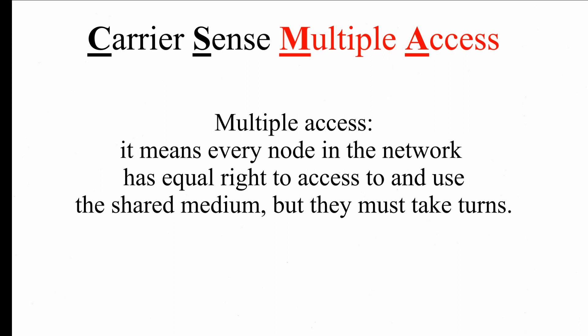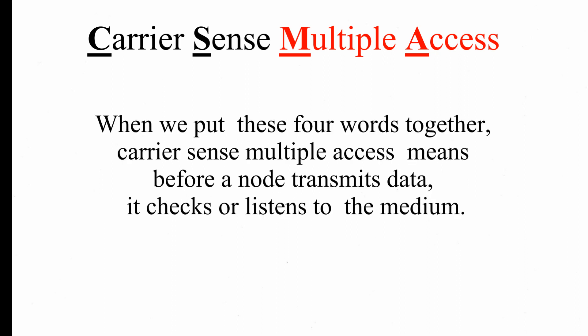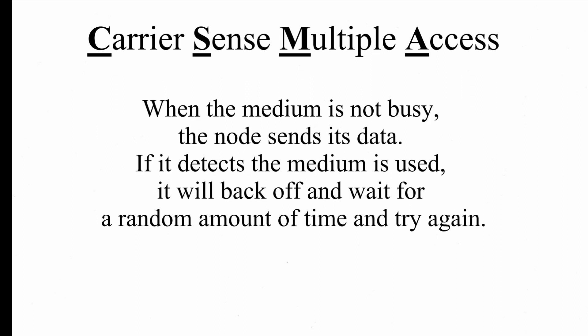Multiple access means every node in the network has equal right to access and use the shared media, but they must take turns. When we put these four words together — carrier sense multiple access — it means before a node transmits data, it checks or listens to the media. When the media is not busy, the node sends its data. If it detects the media is used by other nodes, it will back off and wait for a random amount of time and try again.